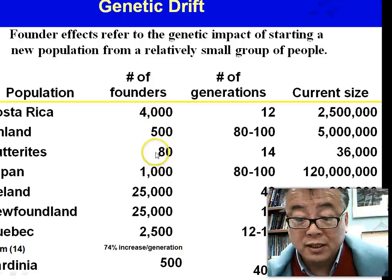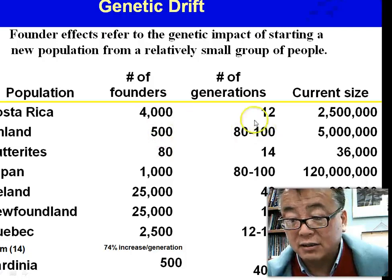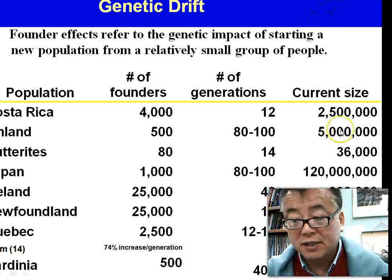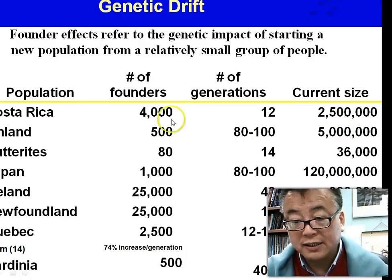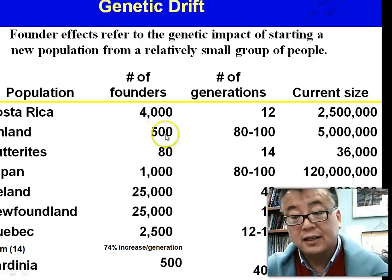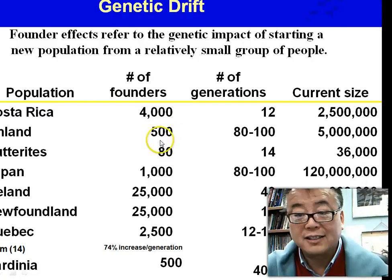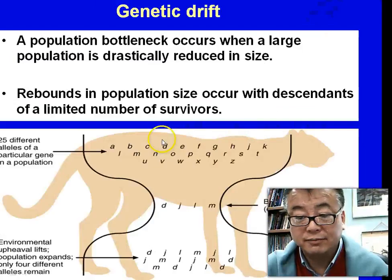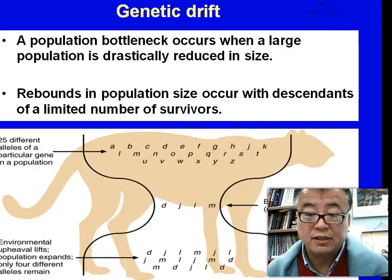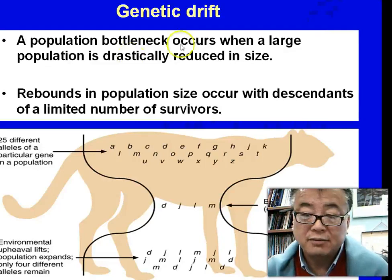These 5 million people, if there is no migration in or out, should represent the genetic makeup of those 500 founders. That is clearly a random sampling, and that is called genetic drift. There is another type of genetic drift that leads to a bottleneck — caused by population bottlenecks.